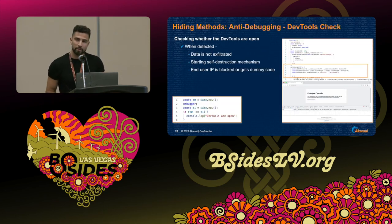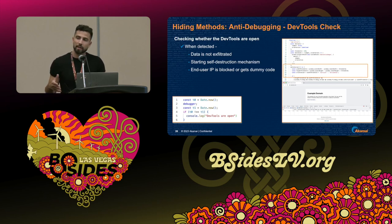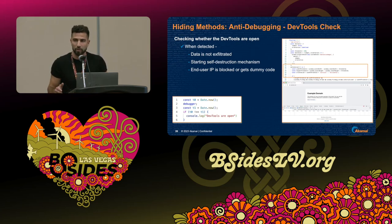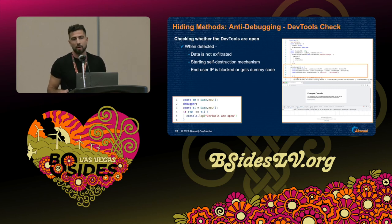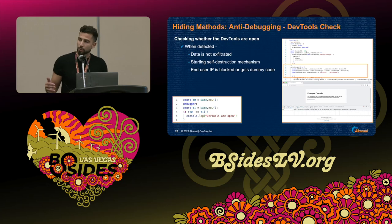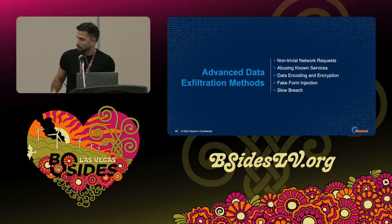Last, we saw many cases where attackers injected anti-debugging mechanisms into the script to complicate reverse engineering — sometimes making it impossible to understand what the code does without removing that piece. The most common one is a dev tool check. You can see two techniques attackers use to detect dev tools in the browser. In most cases, the dev tool check comes with a self-destruction mechanism: once detected, the attack stops immediately, removes all traces from the page, and in some cases even burns the IP address of the machine to ensure the same code won't be delivered to it again.